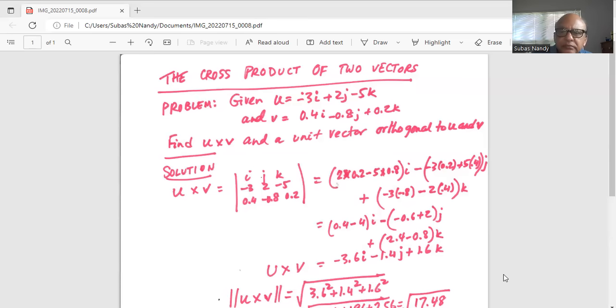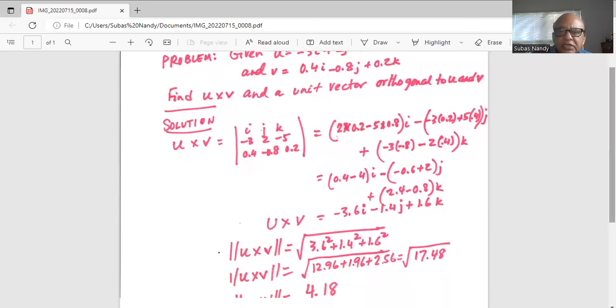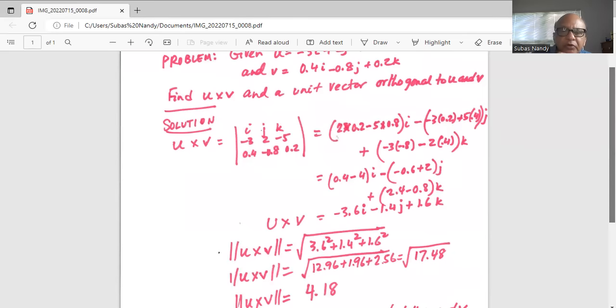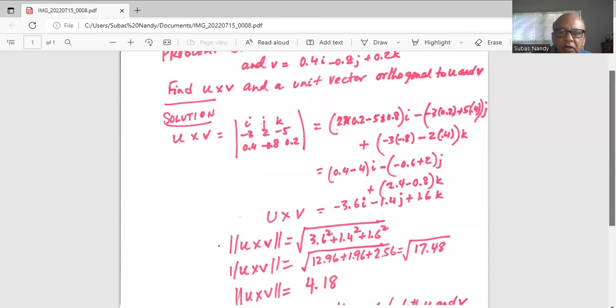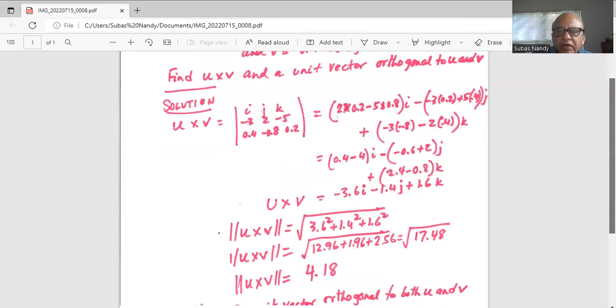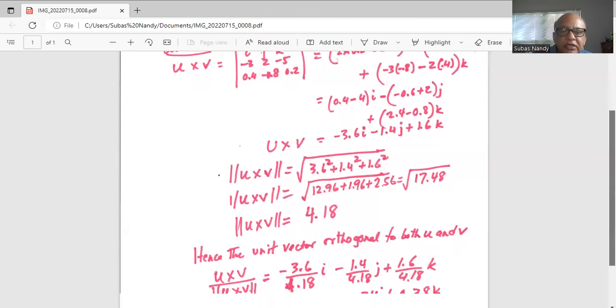Next we find the magnitude of the vector u cross v which is 3.6 square plus 1.4 square plus 1.6 square everything under square root. So it will be square root of 17.48 which is 4.18.